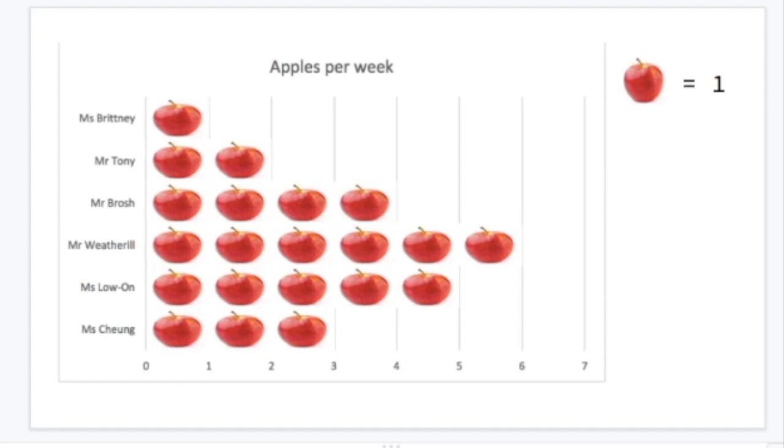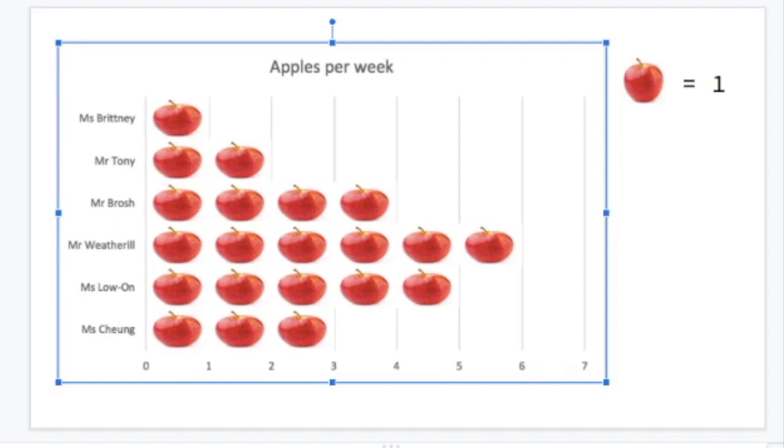In this very simple pictograph, one picture of an apple does equal or represent one apple. I've written that at the top here. So to read this pictograph we would simply count the apples, and that would be how many apples each person ate. For Miss Brittany it would be one apple, for Mr Tony it would be two apples.